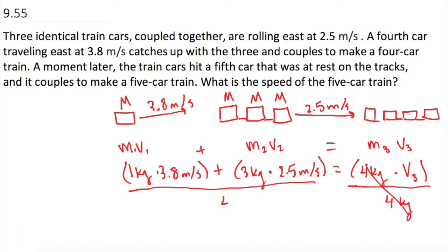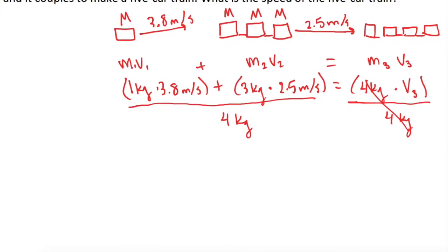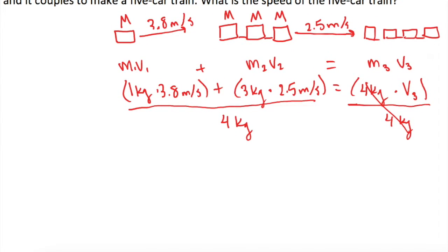Let's divide both sides by 4 kilograms. So now we have 3.8 plus 3 times 2.5, which is 7.5, and that's all over 4 kilograms, which will give us V3. So V3, when we do that, gives us 2.825 meters per second. All right, awesome. So that's the first part.